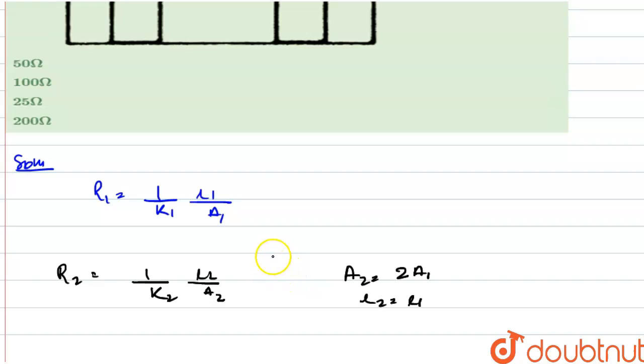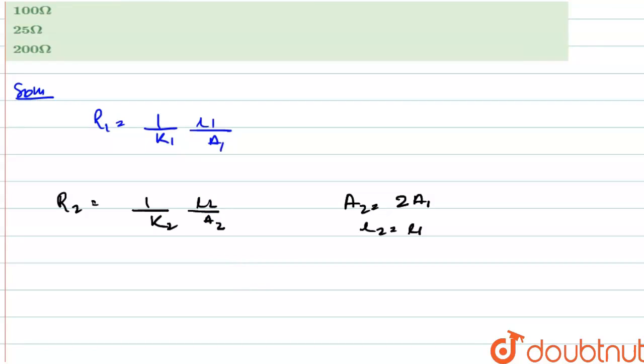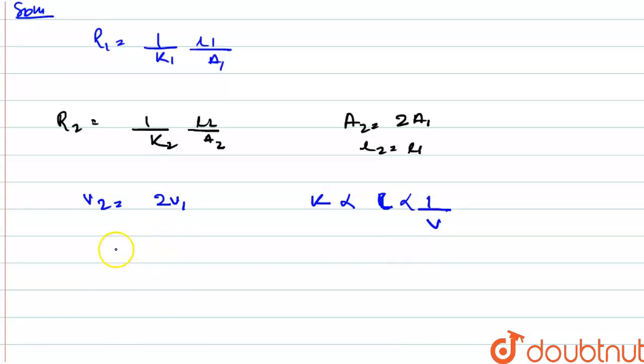Due to dilution, the volume of the solution is doubled. The question is giving that it is dilution, and so V2 is equal to 2 of V1. And we know that K is inversely proportional to concentration, inversely proportional to volume. So we can say that K2 is equal to K1 upon 2.